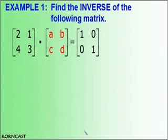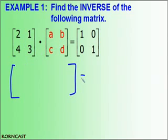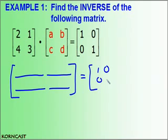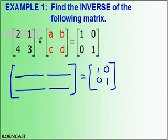Continuing with example 1, we now need to multiply this 2 by 2 matrix by this 2 by 2 matrix. Since we multiply a 2 by 2 times a 2 by 2, our resulting matrix will also be a 2 by 2 matrix. Our goal is to find these 4 entries. I know that this product will result in the identity matrix, and since I'm multiplying 2 by 2 times 2 by 2, I need to multiply using rows and columns.